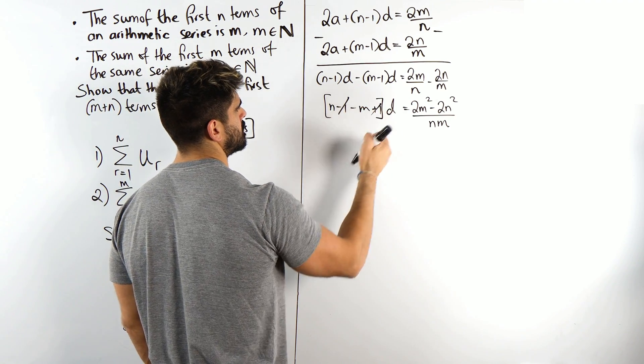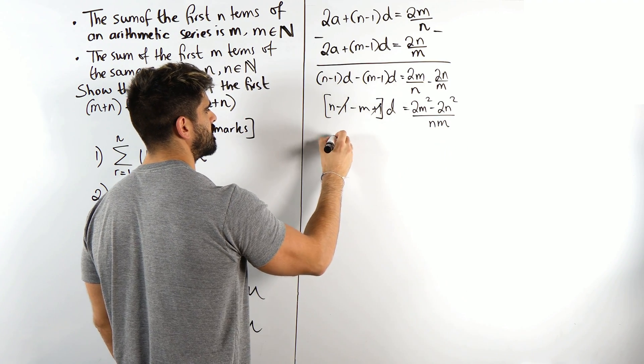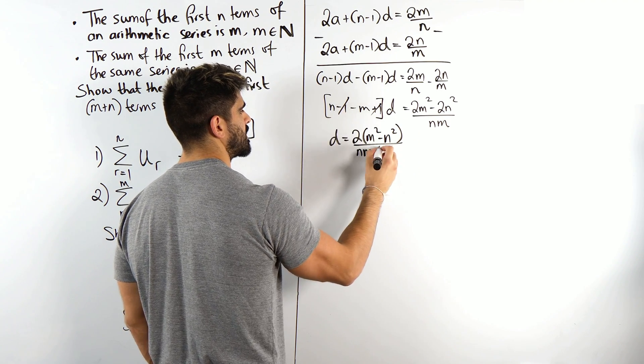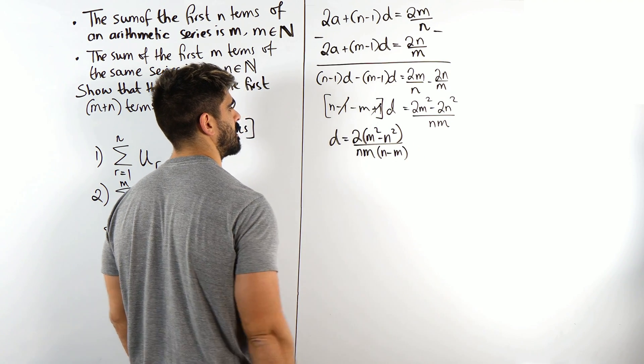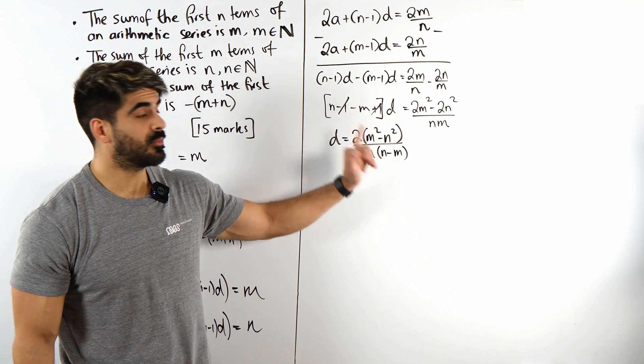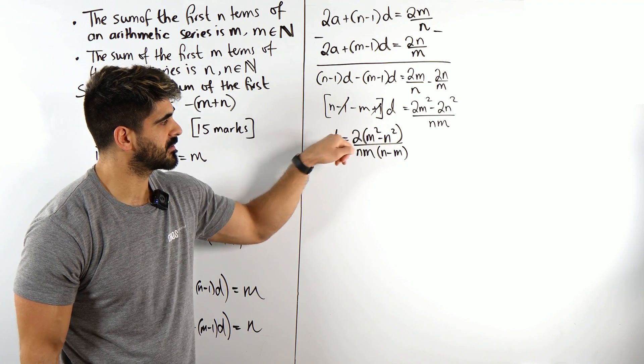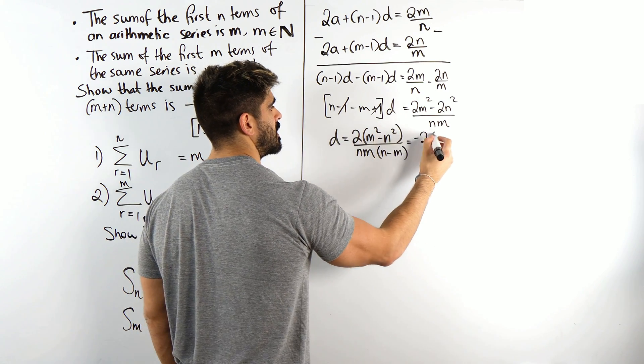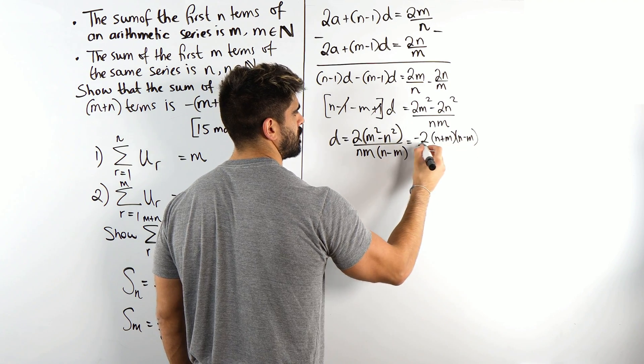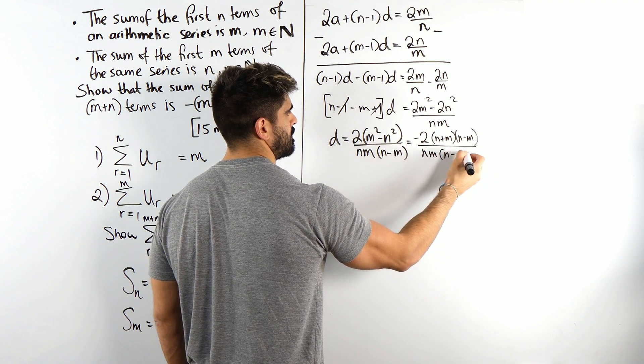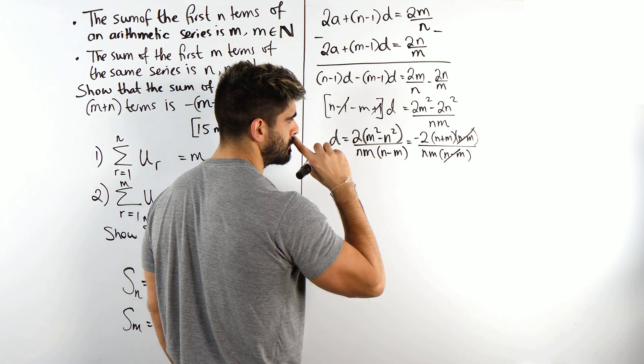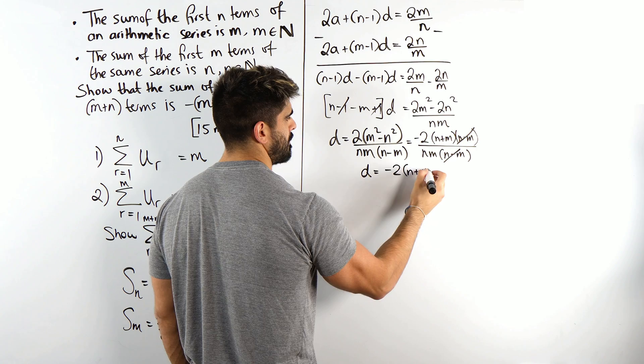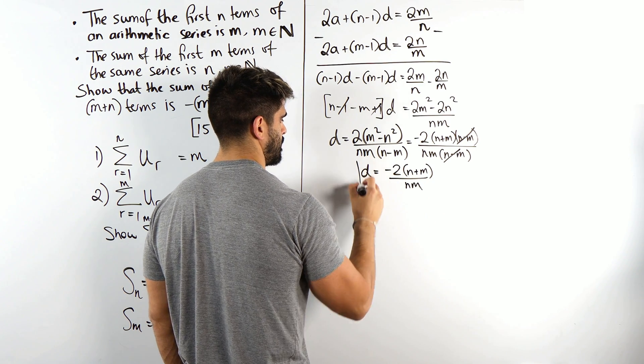So these do cancel. That n minus m I'm going to bring underneath. So d, here I'm going to factorize out the 2, m squared minus n squared over nm and then the n minus m can come down. Now I actually noticed that the numerator and denominator can cancel if I do the difference of two squares here, but I'm going to have to factorize out the negative first. So I get negative 2, then if I do that the n squared would become at the front so it becomes n plus m times n minus m all over nm times n minus m. These then cancel and that's it. That's d. So d is minus 2 times n plus m over nm.